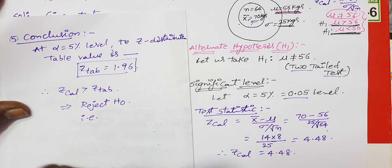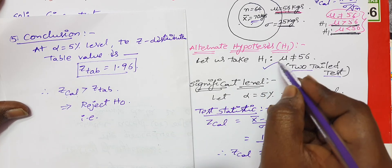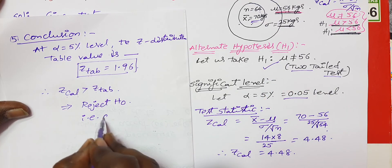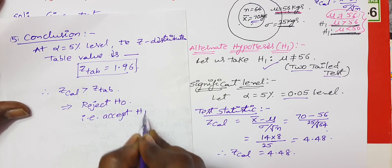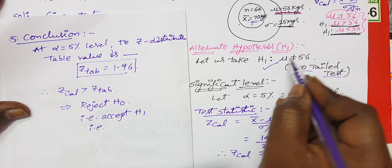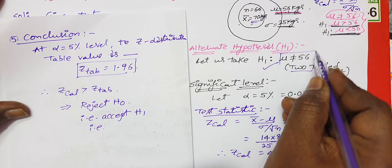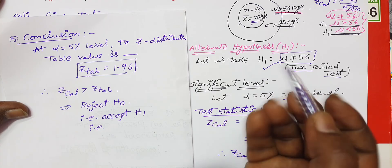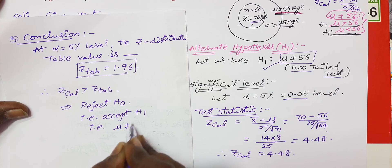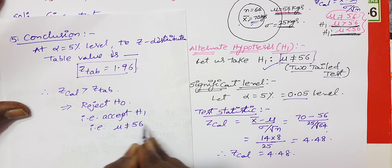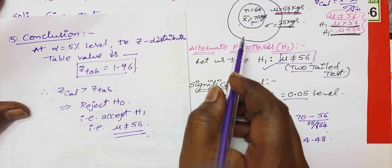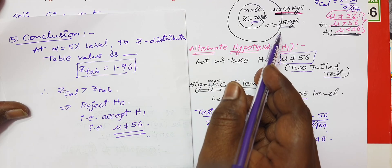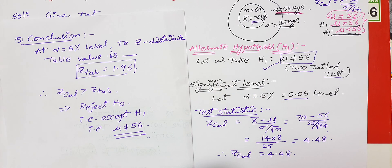That means H1 is accepted. So mu is not equal to 56. The conclusion is: the sample is not taken from the population whose mean is 56 kgs. Thank you very much.